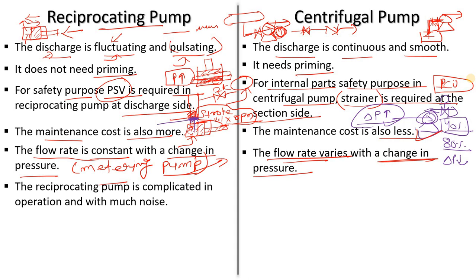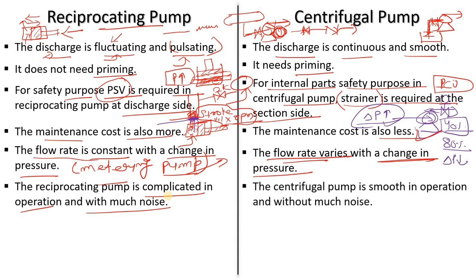The reciprocating pump is complicated in operation and creates much more noise due to the piston arrangement moving backward and forward. In a centrifugal pump, operation is smooth — there is simply one impeller rotating, converting kinetic energy into pressure energy — and it creates less noise.